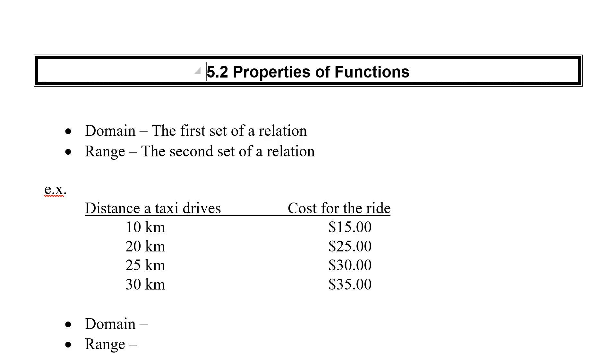I remember back yesterday we were looking at expressing our relationships in four different ways: words, ordered pairs, tables, and arrow diagrams. Now we want to look at these functions a little more detailed.